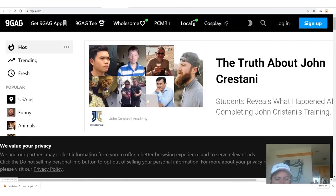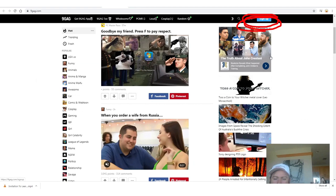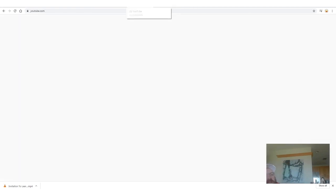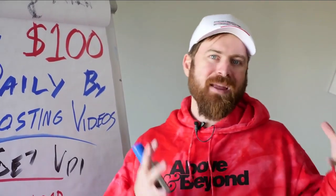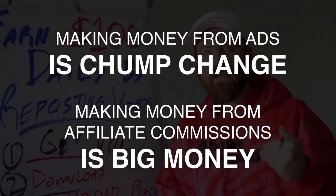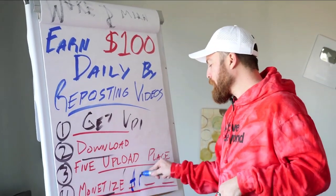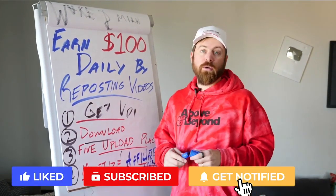Here's another site called 9gag — it's another kind of like viral video meme-y type website. So you can just upload videos here, sign up right here to get started. And last but not least, you can even re-upload my videos to YouTube. The thing about YouTube is because I was the first person to upload my own video to YouTube, I end up making the AdSense revenue — but you end up making the affiliate commissions, which is what we're going to talk about next. So the most important way of monetizing is actually not making money from the ads.